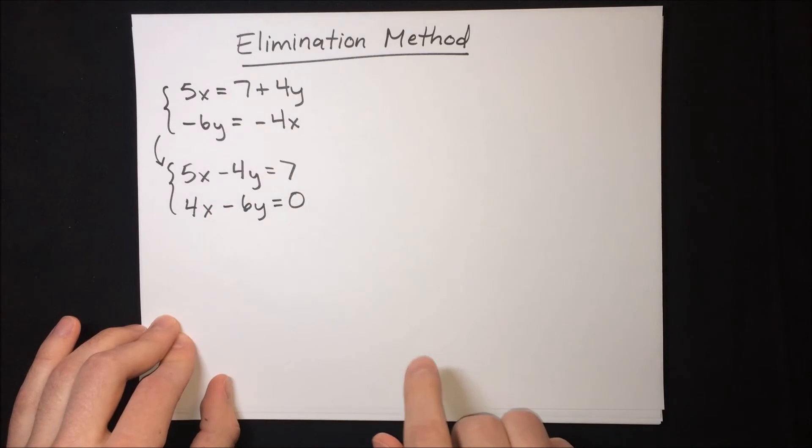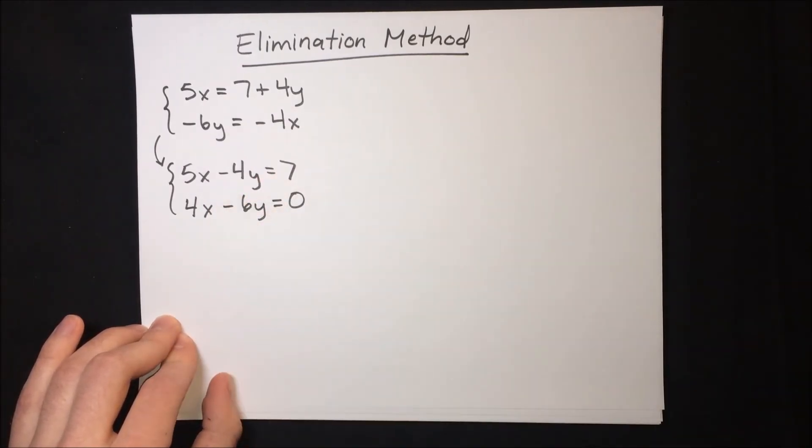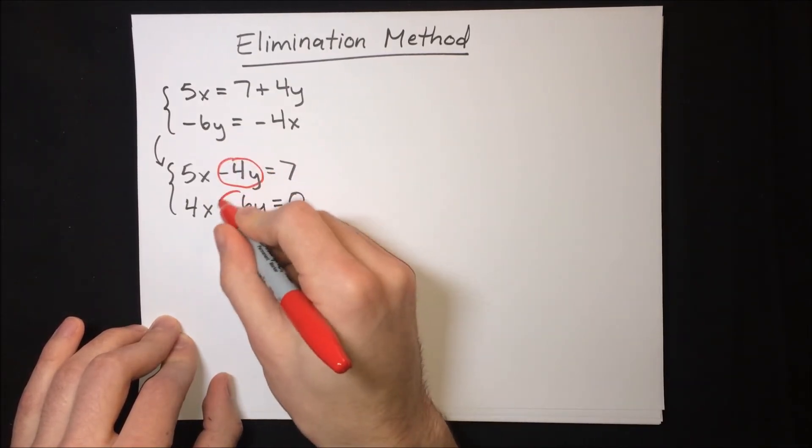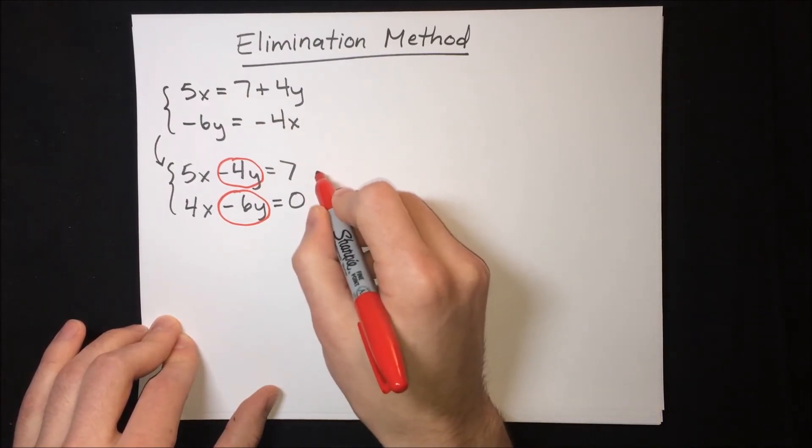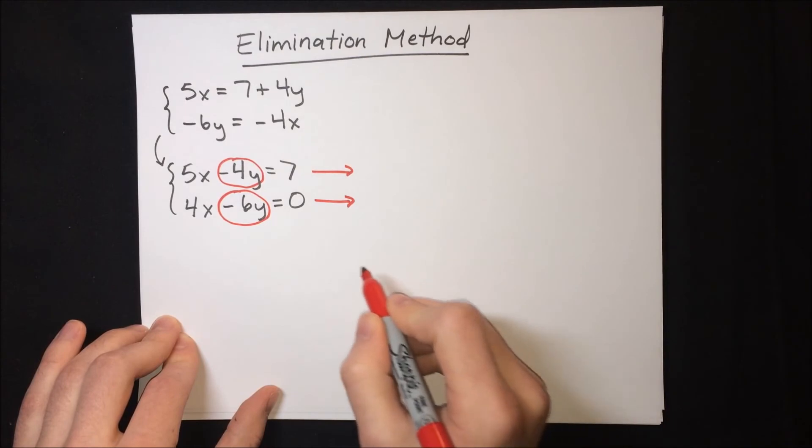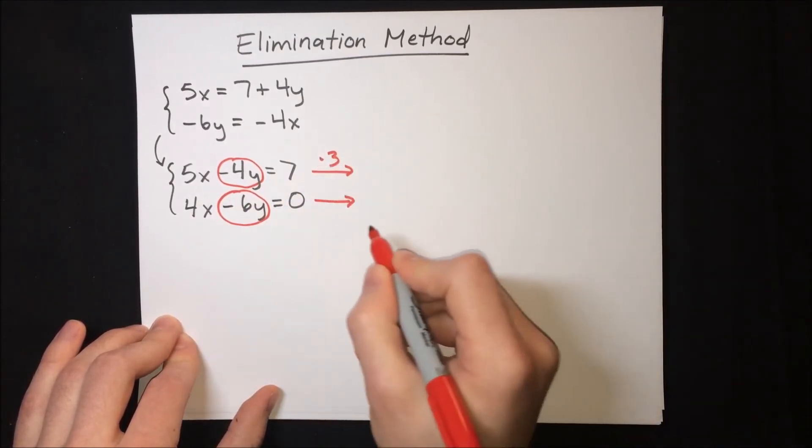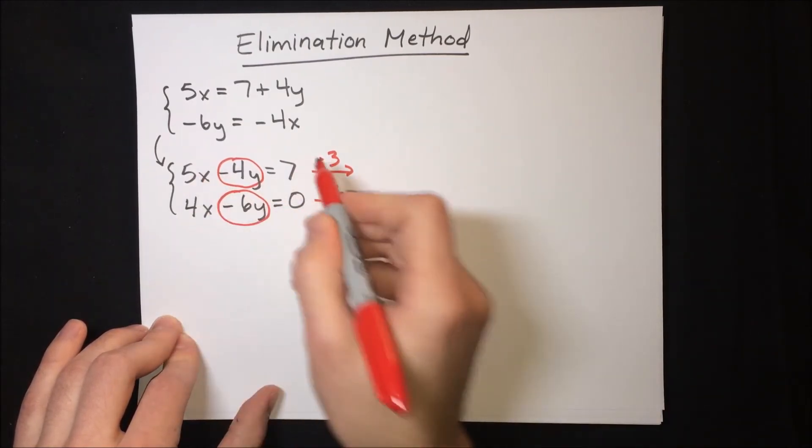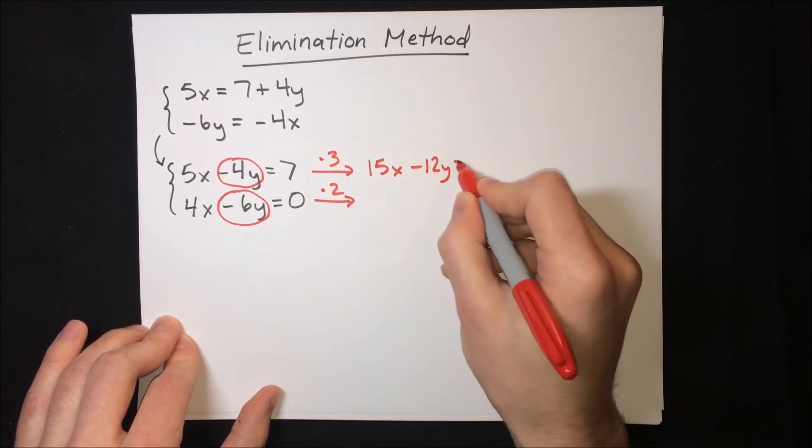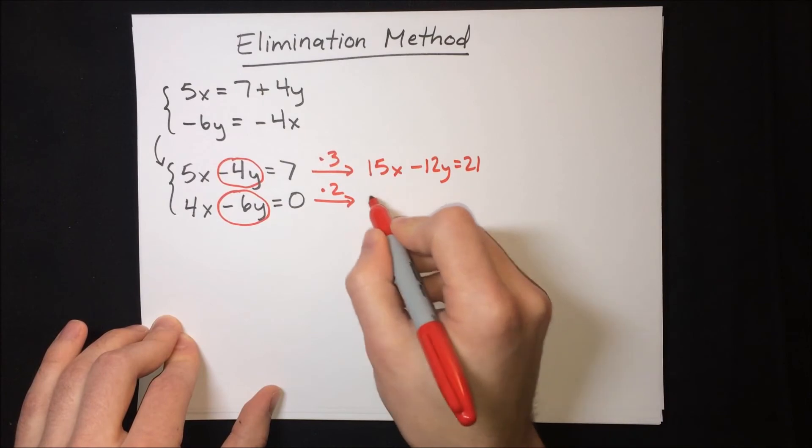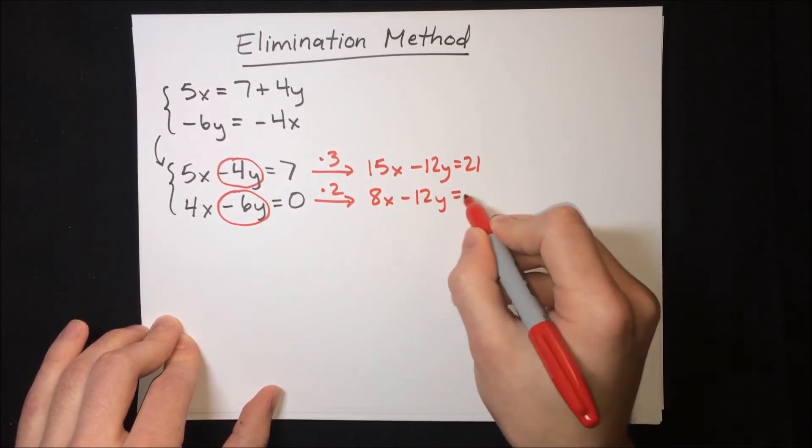Now our system is organized the way we're used to seeing it and we can see that this negative 4y and this negative 6y, well we can get them both to be 12y. Let's first get them both to be negative 12y because that's easier. We just have to multiply this top equation by 3 and this bottom equation by 2. So multiplying the top by 3 we get 15x minus 12y equals 21. Multiplying the bottom by 2 we get 8x minus 12y equals 0.